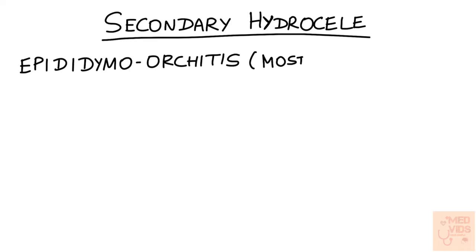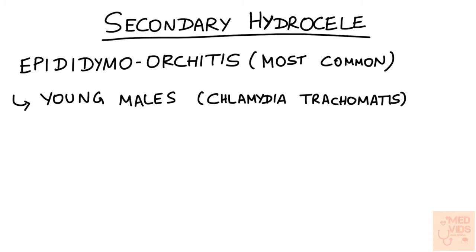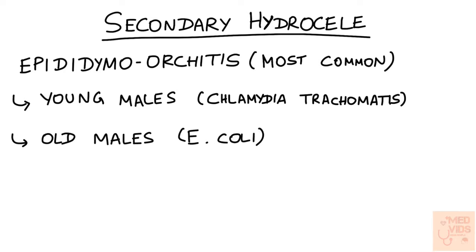Epididymo-orchitis is the most common cause of secondary acquired hydrocele. In young males the most common causative organism is Chlamydia trachomatis, because they are in the sexually active age group. In older males, the common organism is E. coli, because the pathology is urine retention causing UTI, and the pathogen responsible for UTI is E. coli, which in turn causes epididymo-orchitis in this age group.